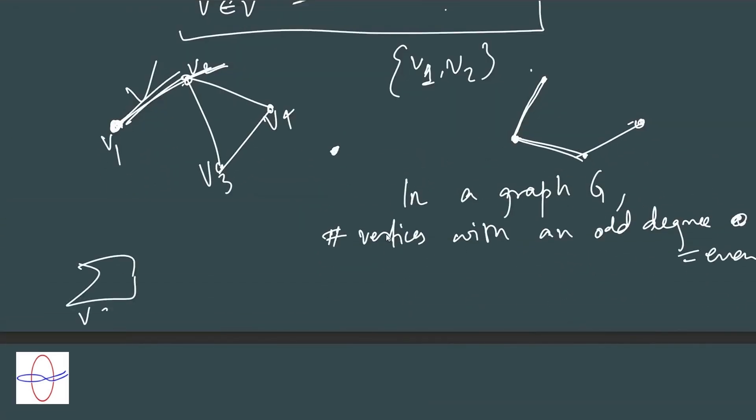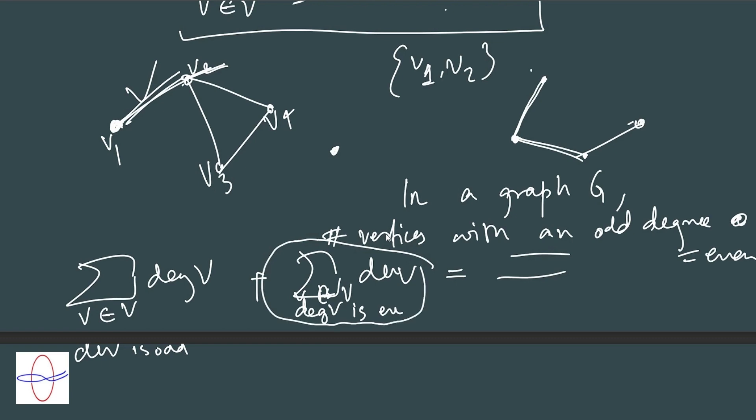Because say you do this: sum over v element of V where degree v is odd, plus sum over v where degree v is even - we know this total equals sum over all v of degree v, which is even. Clearly since all the degrees are even in the second sum, that term is even. You take this to the other side, so you have even minus even which is even. So you add a bunch of odd numbers and get an even number. Clearly the number of odd numbers you're adding is even, otherwise if it was odd this would be odd. So there's an even number of vertices with an odd degree and we're done.